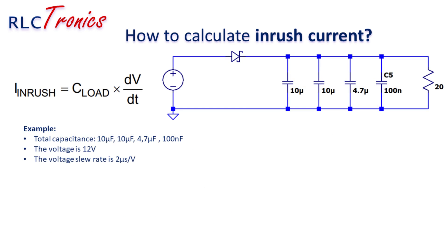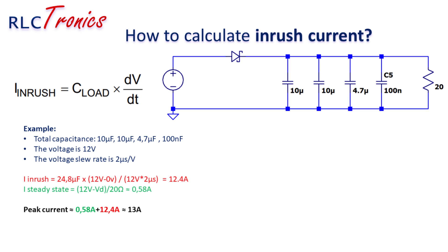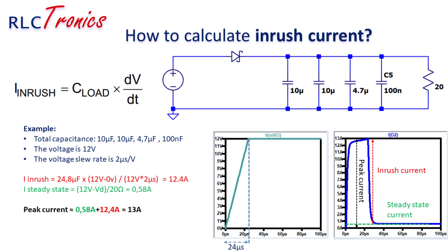For example, you have four capacitors in your circuit and you have an input voltage with a slew rate of 2 microseconds per volt. This means a total rise-up time of 24 microseconds to jump from zero volts to 12 volts. When those parameters are known, it is very easy to calculate your inrush current. In this case, the inrush current is 12.4 amperes. I also added a resistor to simulate an electrical load of 20 ohms that is consuming a current of 0.58 amperes, represented by the steady-state current.